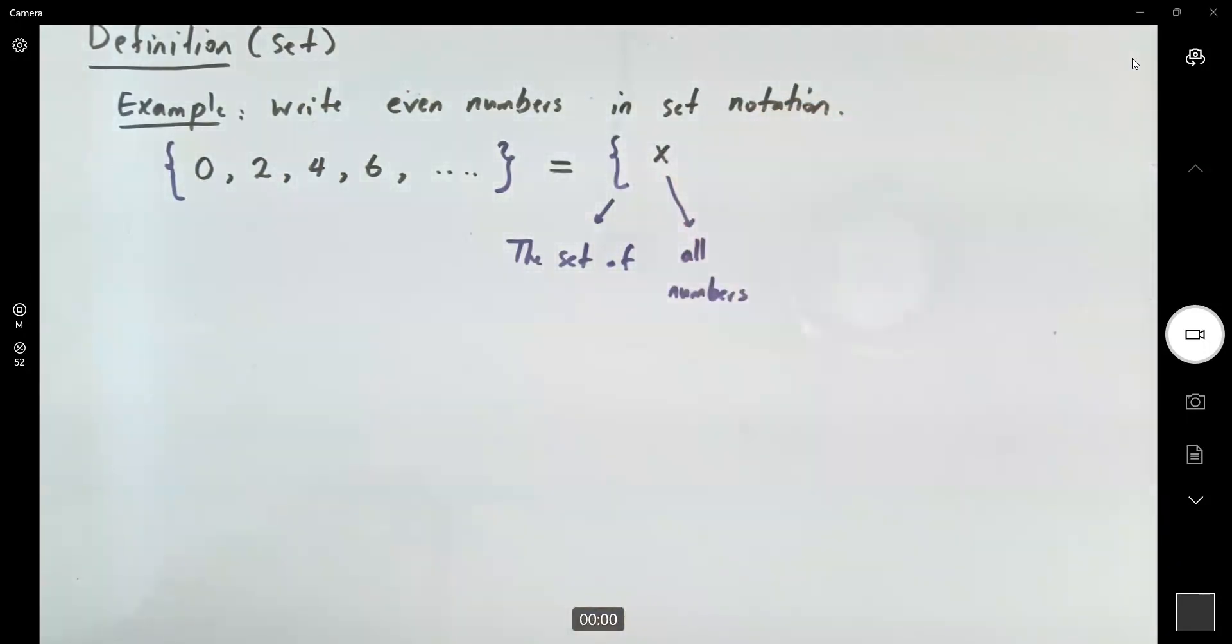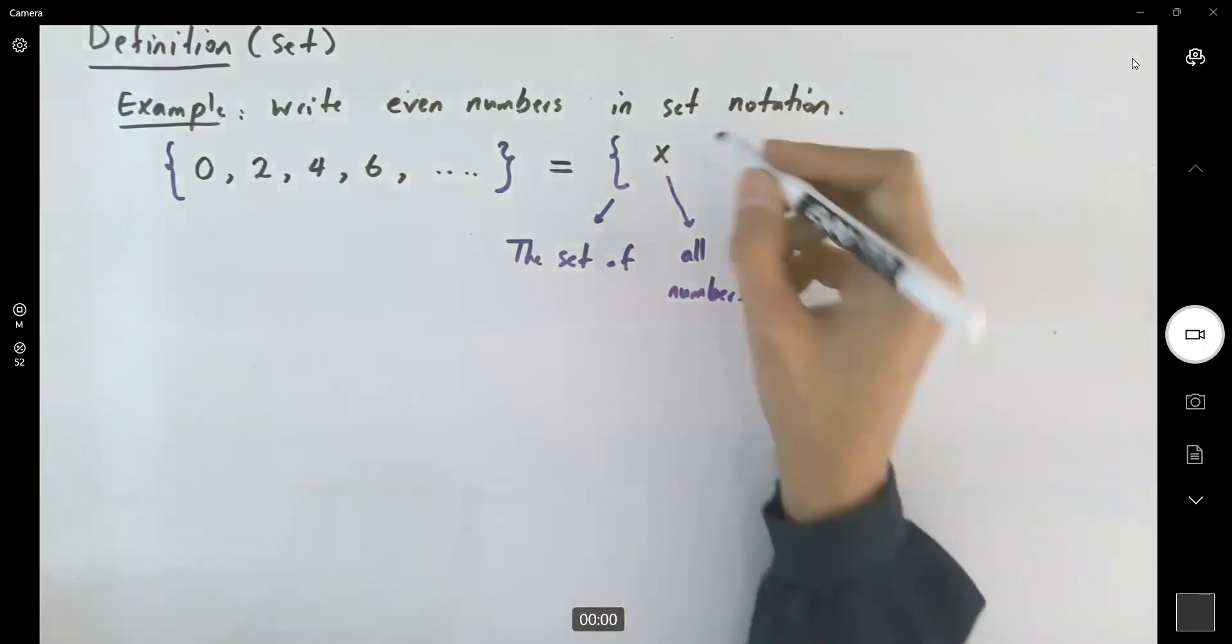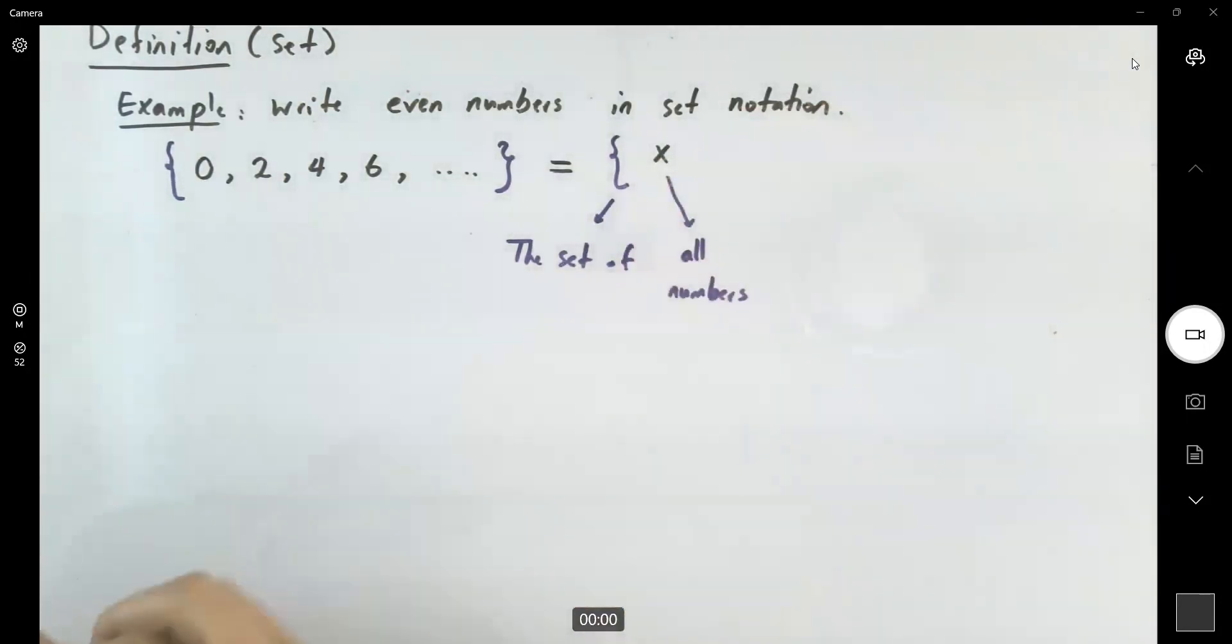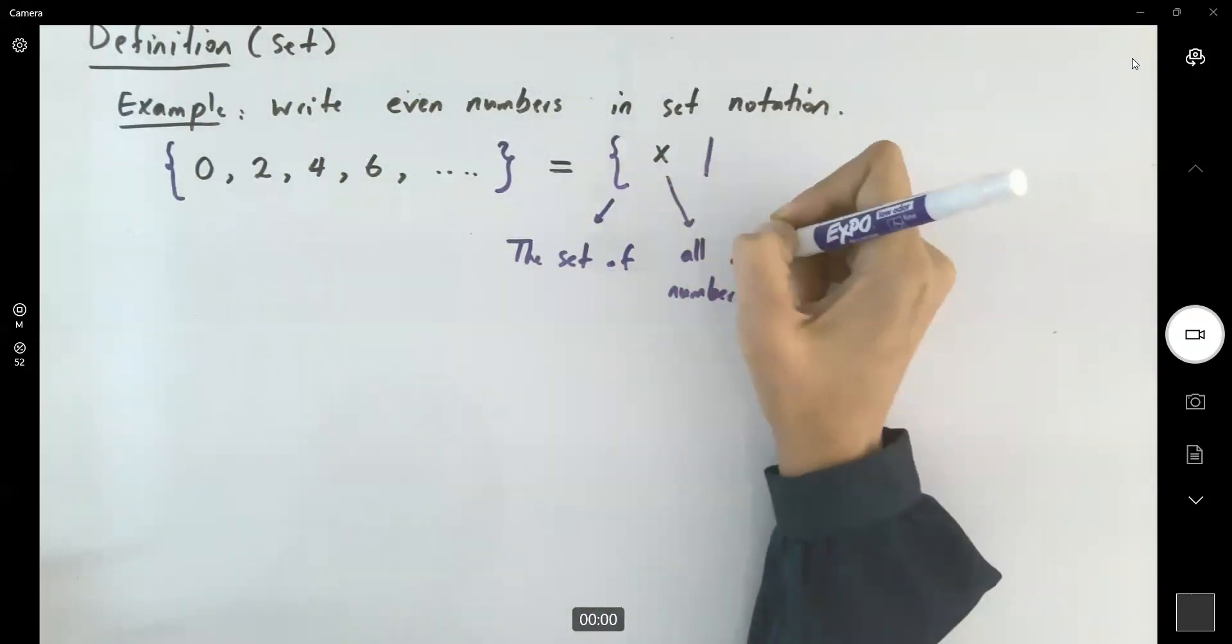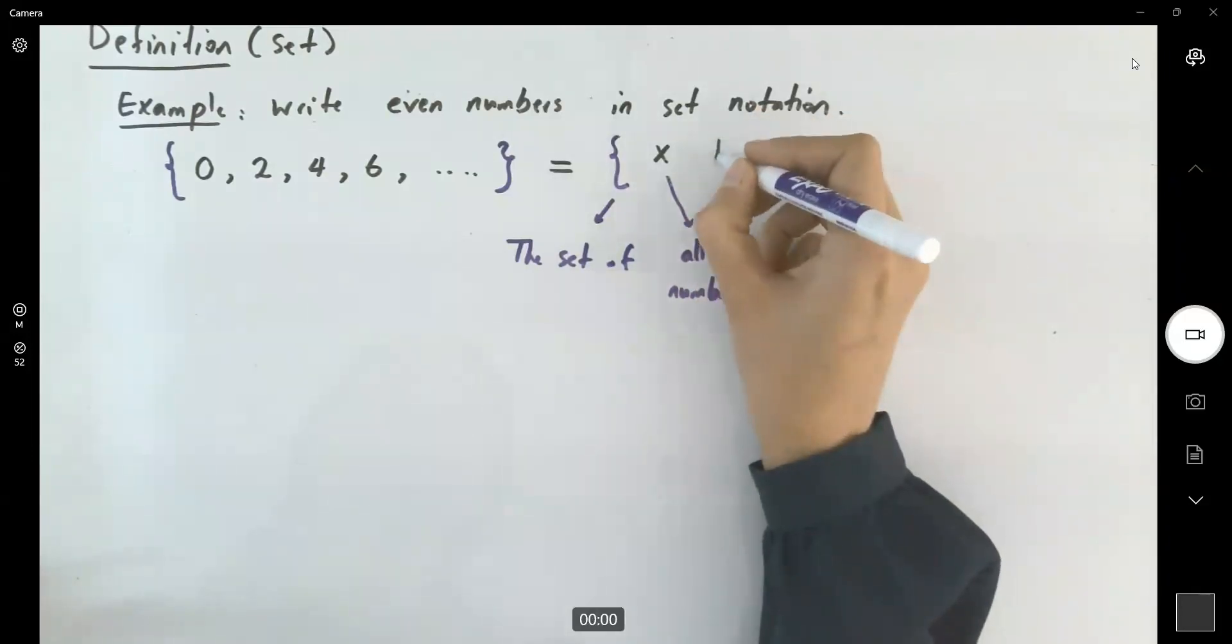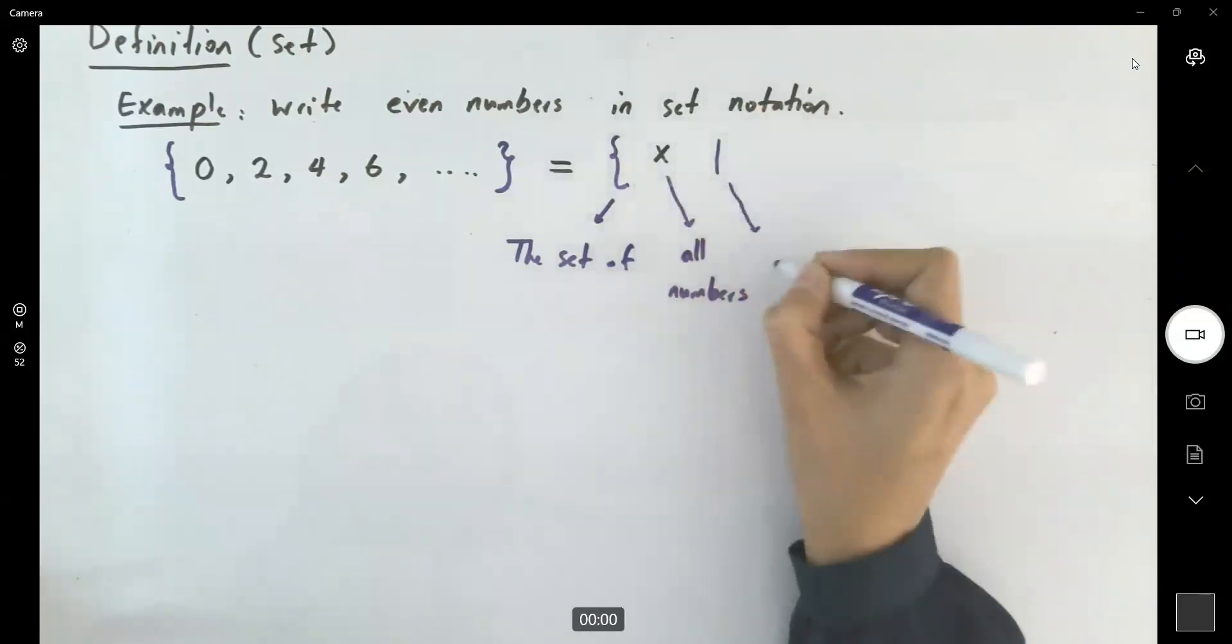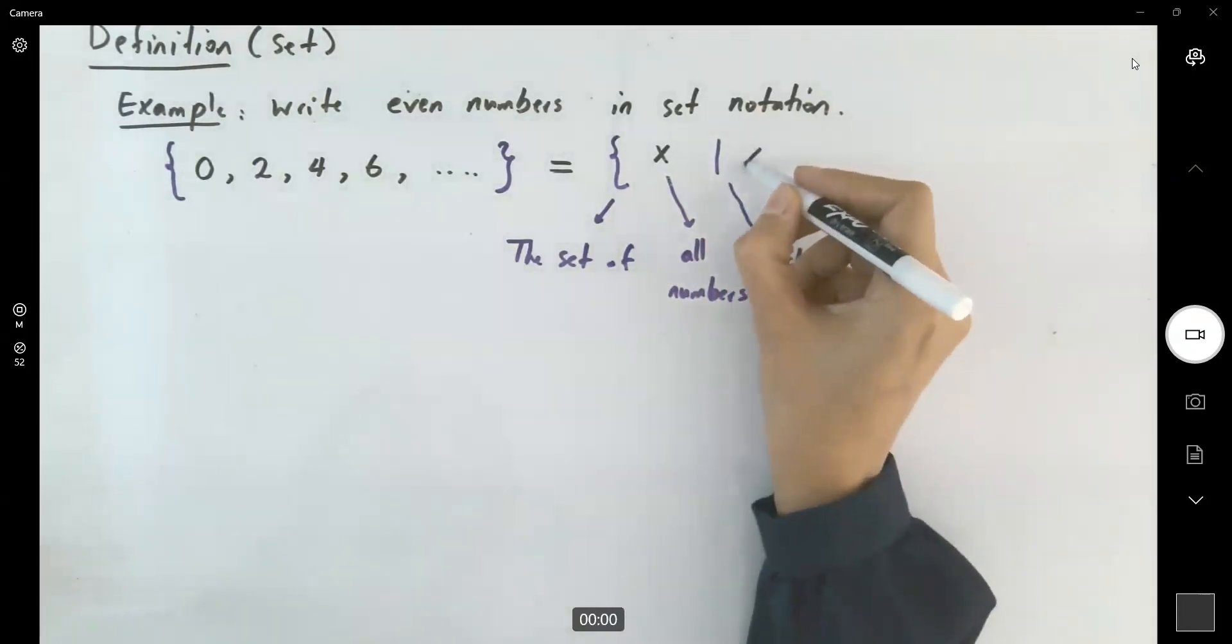These numbers must have some property, something that satisfies the condition for that number. The symbol you're going to use is 'such that,' with the condition that we use a vertical line and read it as 'such that' with the condition that x is an even number.